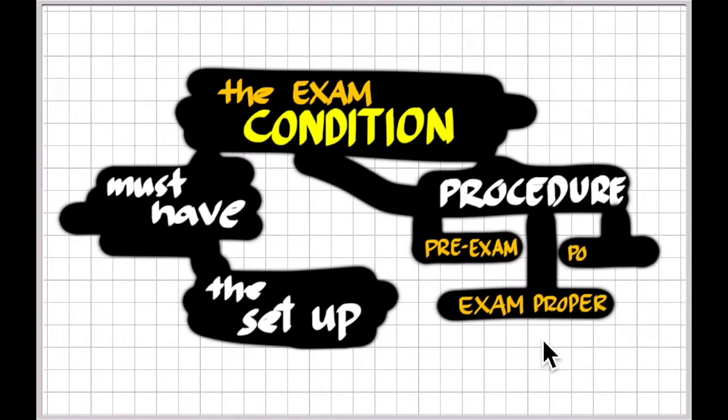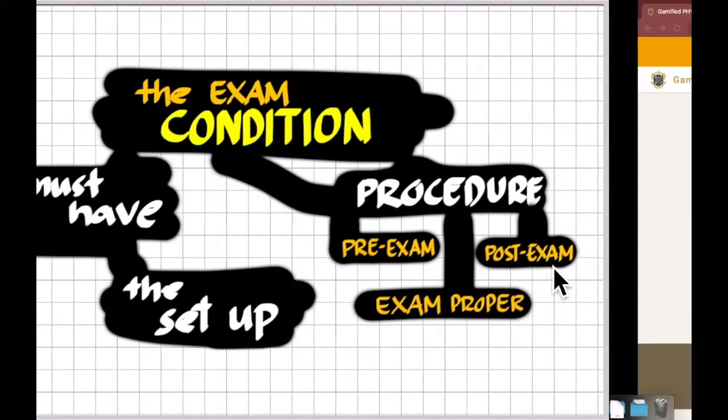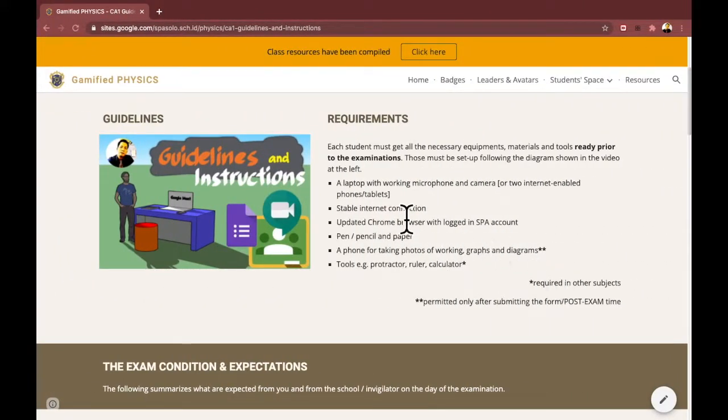I have placed several information on one of the pages of the website for all physics classes, and this is the list of the requirements for the online assessment. You need a laptop or a desktop with working microphone and camera. If you do not have a laptop, two internet-enabled phones or tablets can be prepared.